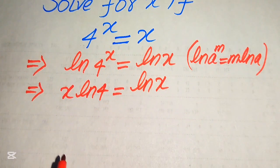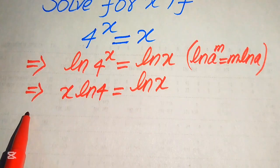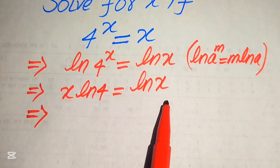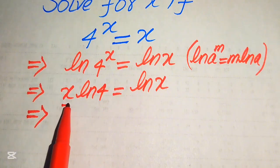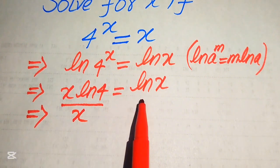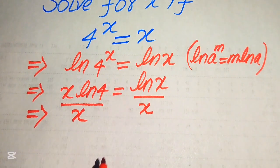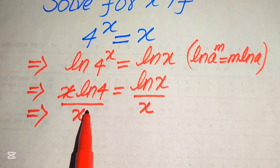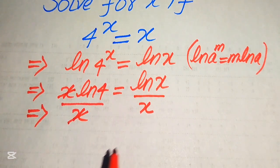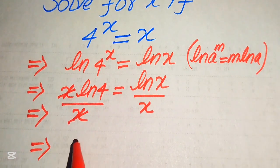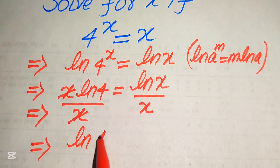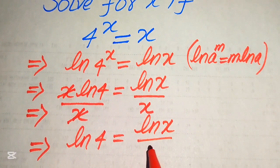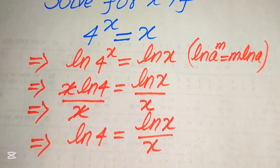Now we move the variable terms to the right-hand side by dividing both sides by x. The x on the left cancels and we obtain log 4 equals log x divided by x.